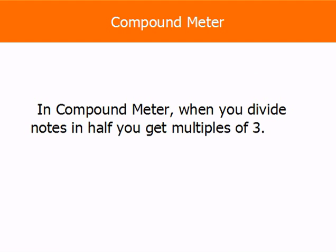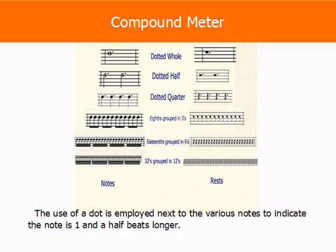In compound meter, when you divide notes in half, you get multiples of three. So look at these dots. You put a dot next to the note, and that note will become one and a half beats longer. So what was a half note on the second level there, if we take a dot and add one half of a half note to the half note, you get two beats, and it becomes three.